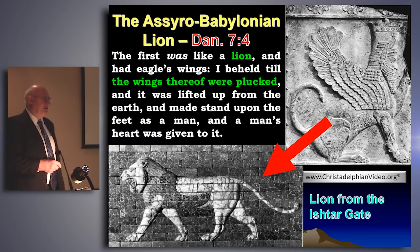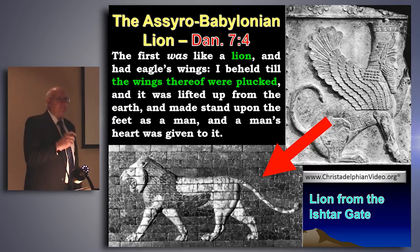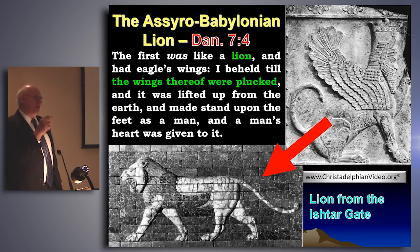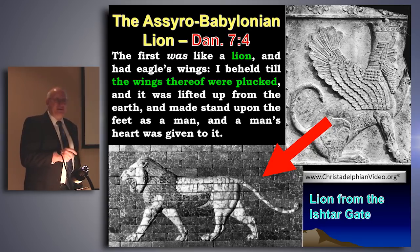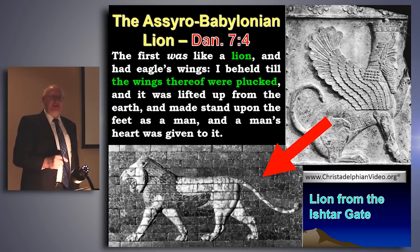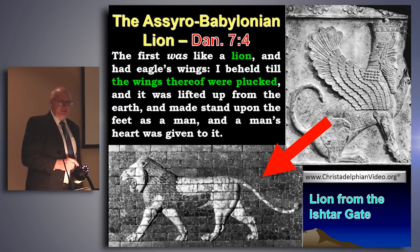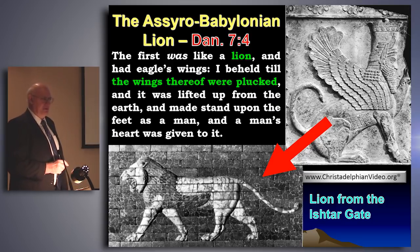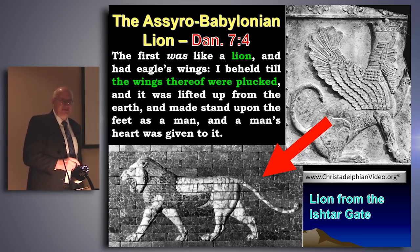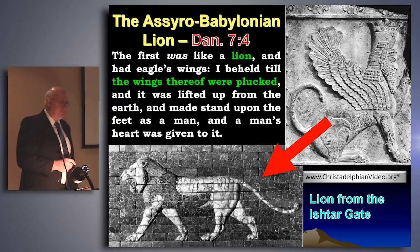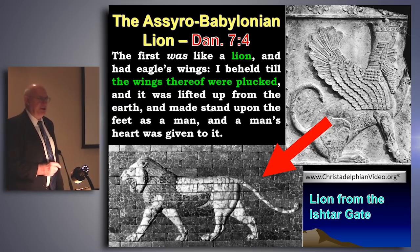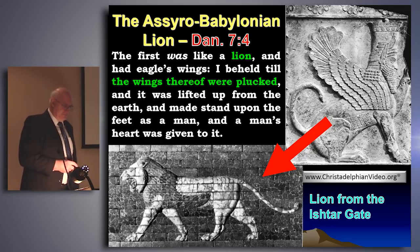That's why in Daniel chapter 3, Nebuchadnezzar creates an image all of gold in the human shape — that's how men see themselves. But when God comes to deal with them in Daniel 7, he presents nations and empires as wild beasts — savage beasts who have torn his people, Israel, apart down through the centuries of time.